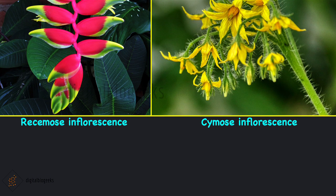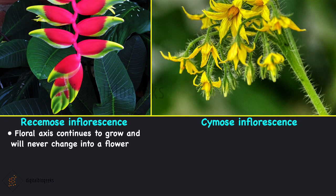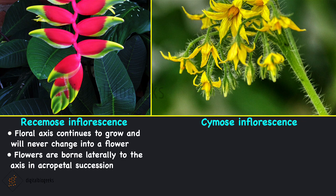There are mainly two types of inflorescence: racemose and cymose. In racemose inflorescence, the floral axis continues to grow and will never change into a flower. Flowers are borne laterally to that axis in acropetal succession — meaning the young flower will be on the top and the older one at the bottom.